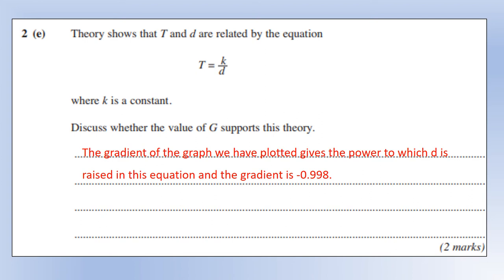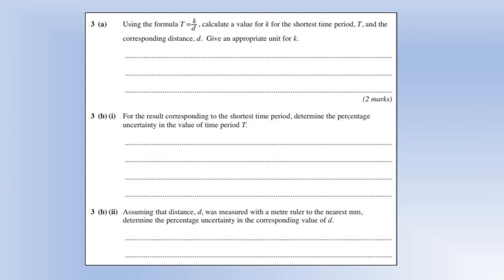So our graph tells us the power of d is minus 0.998. Whereas theory tells us the power of d is minus 1. So I would be pretty damn confident that our graph supports the theory. We got incredibly close to the correct value according to the theory there. Okay, so still using the formula t equals k over d. Calculate a value of the k for shortest time period t, and the corresponding distance d giving it an appropriate unit. So again, looking back at the table, the values are 1.01 and 0.800. k is going to be t times d, giving us, and we've done a length times time, so it's 0.808 meters seconds. So that's not milliseconds, that's meters seconds.